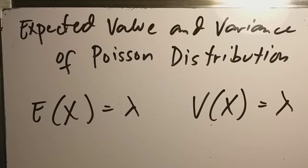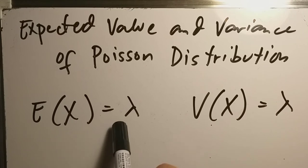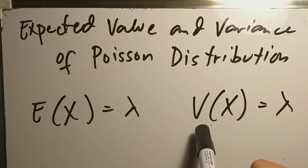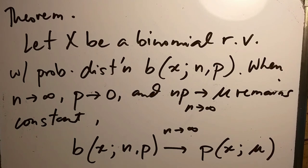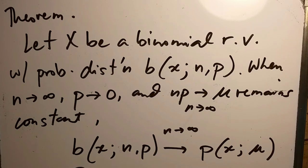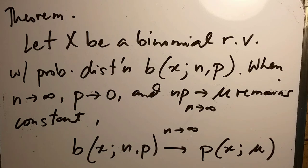The expected value and variance of the Poisson distribution are both equal to λ: E(X) = λ and Var(X) = λ. There is a theorem: let X be a binomial random variable with distribution B(x; n, p). When n approaches infinity, p approaches 0, and np approaches mu (remaining constant), the binomial distribution tends to the Poisson distribution with parameter mu.